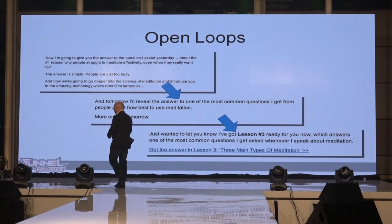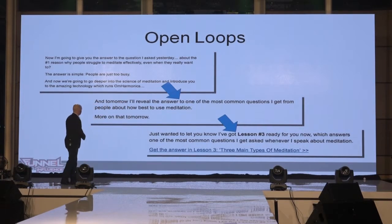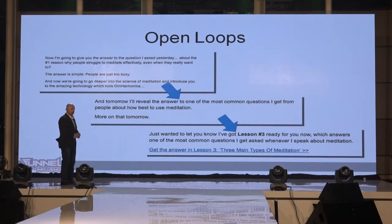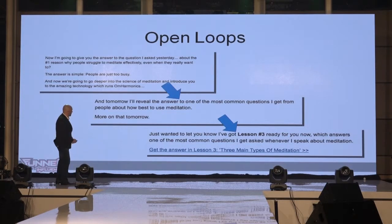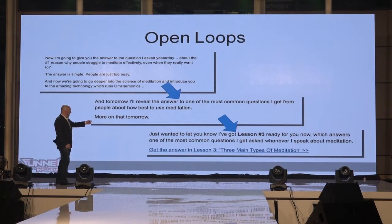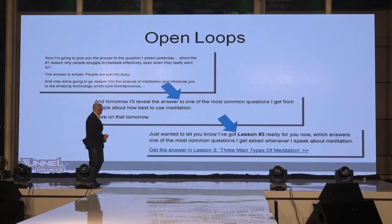You can also do open loops over multiple emails — spreading the story over three different emails. It basically says 'tomorrow I'll reveal the answer,' and then it reveals the answer in the next email.